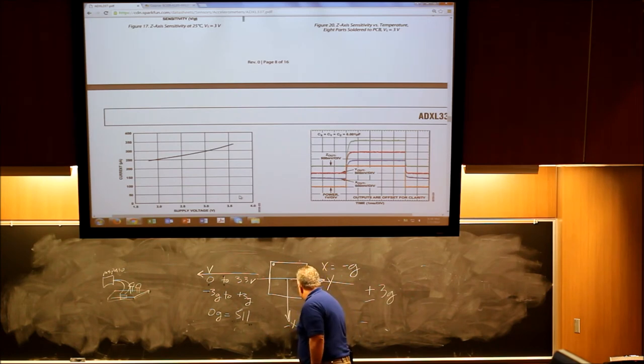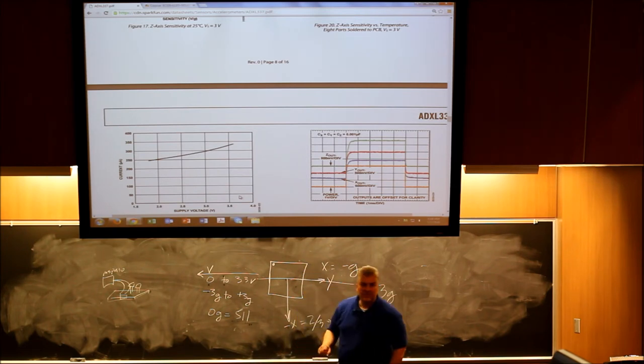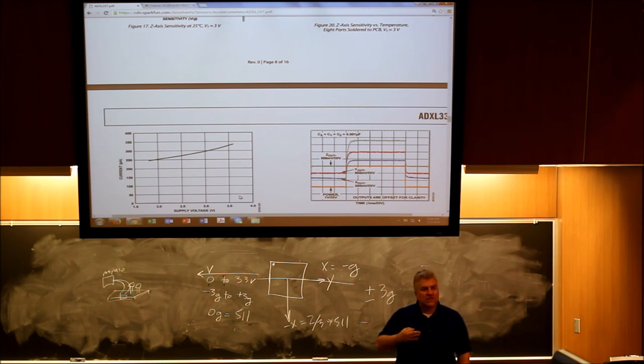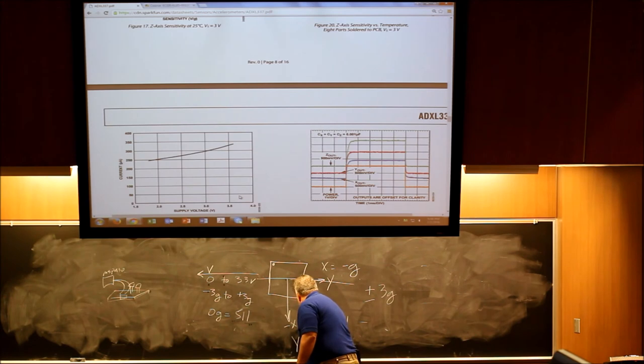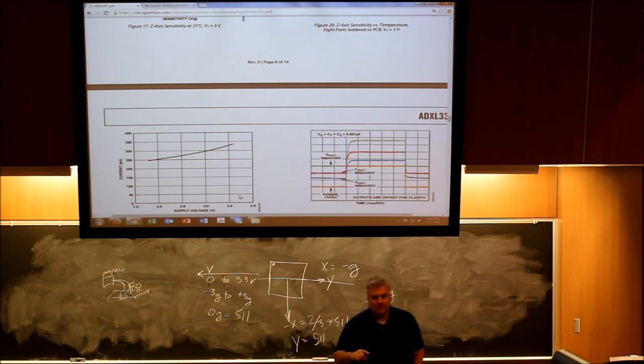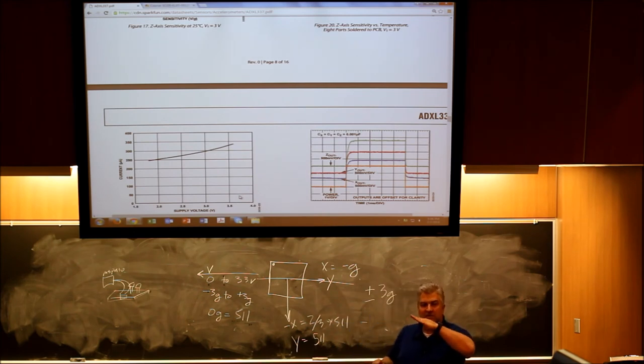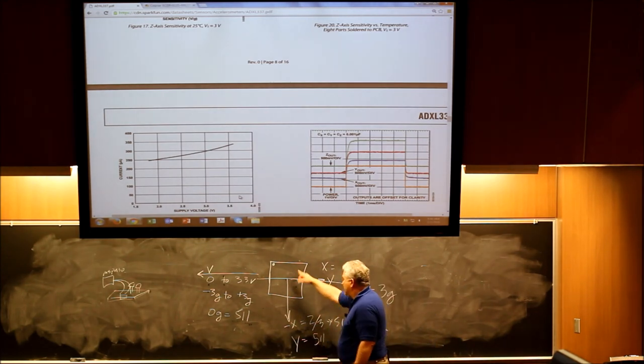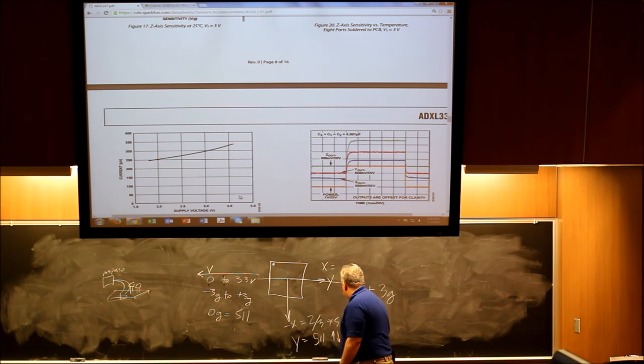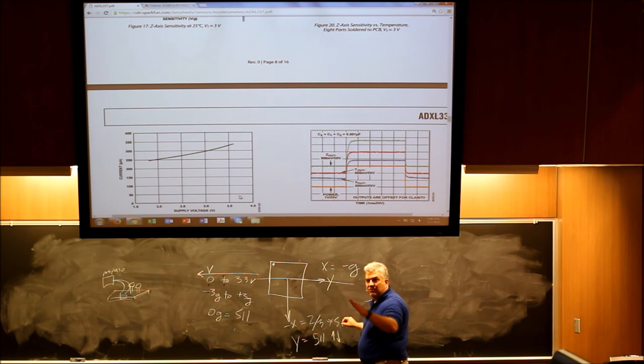So it would be two-thirds times 511, and that would identify that's straight. And then, by the way, Y would be equal to 511 because it would be nice and level. And then when you would tip it, obviously this would change whether, depending on your orientation it would go up or down, and this would go up and get closer to 511.